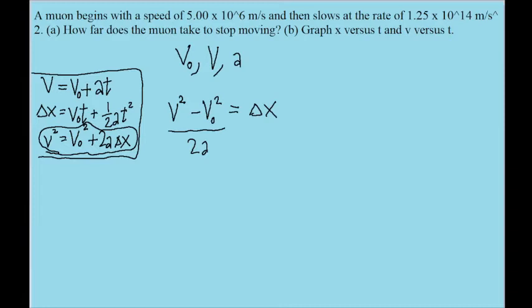Now we can put this into our calculator to solve it. Remember that we'll use zero for v, since zero is the final speed, 5.00 times 10 to the sixth power meters per second for the initial speed. And then for the acceleration, the acceleration is given to us as 1.25 times 10 to the 14th power meters per second squared.